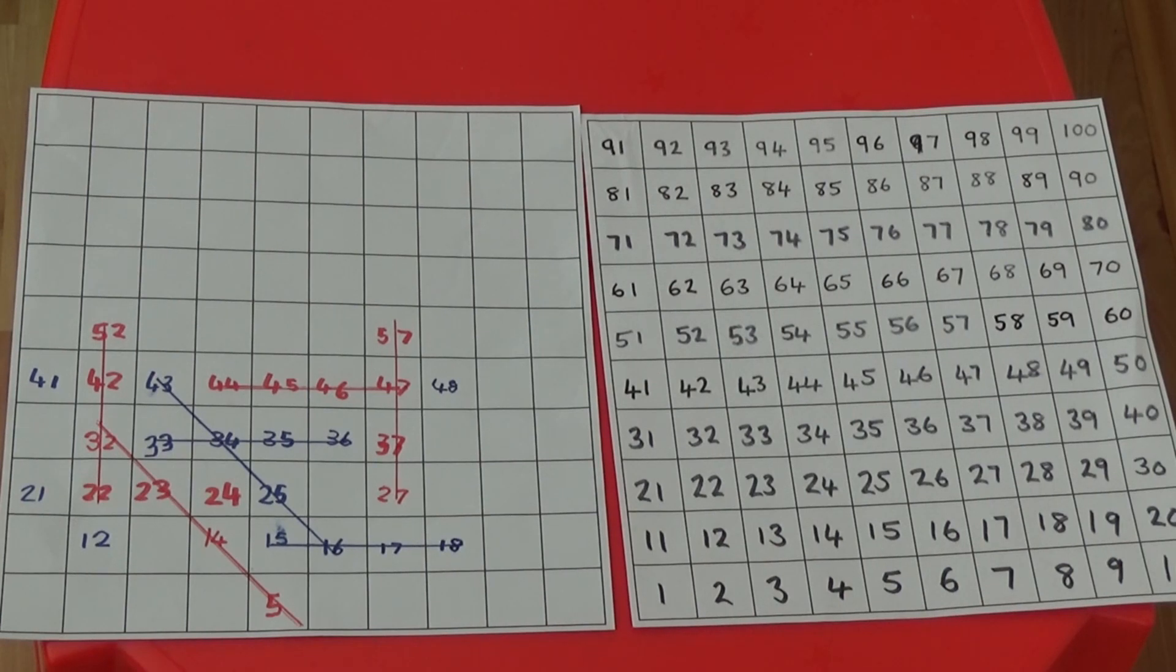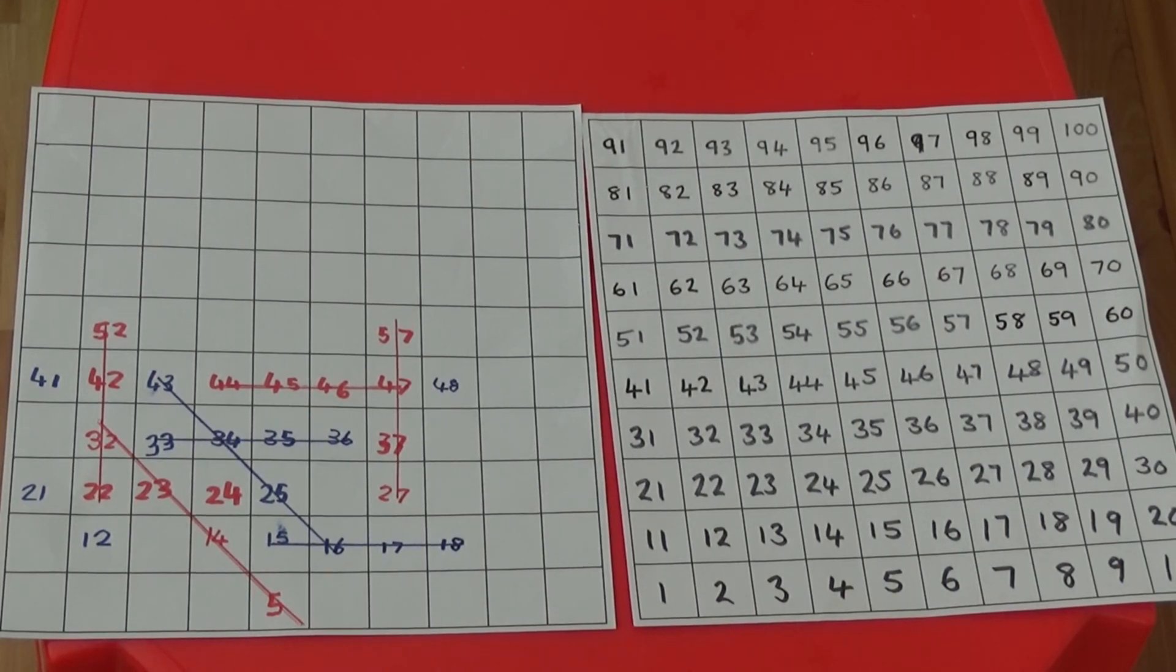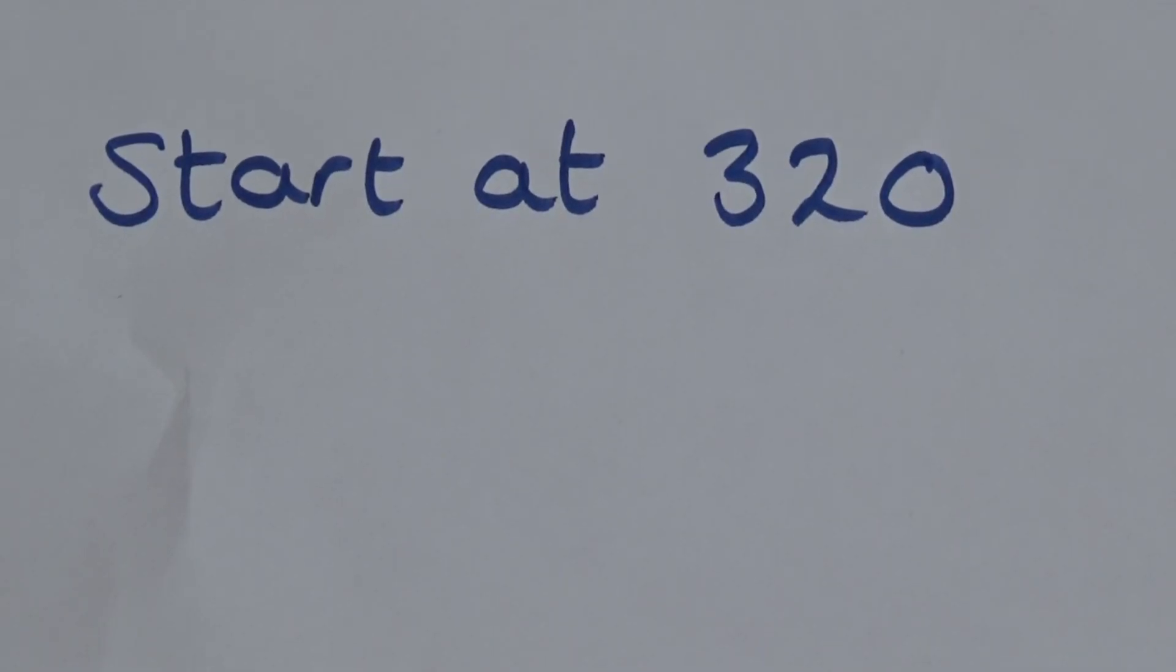If you want to make the game a bit easier, you can have a completed hundred square alongside the blank one. Or you can make it more difficult by starting at a number greater than one hundred, such as starting at three hundred and twenty.